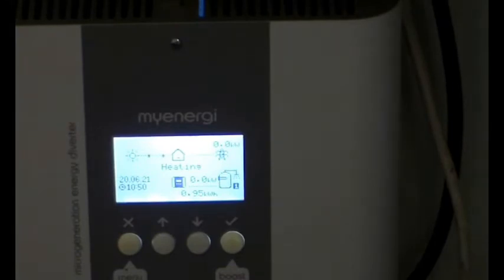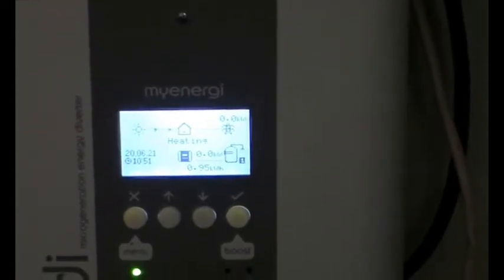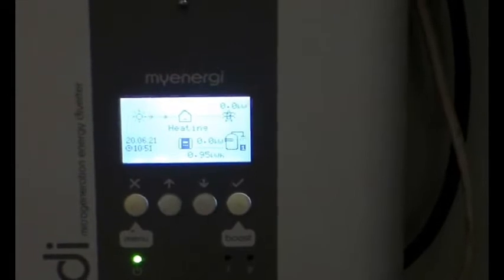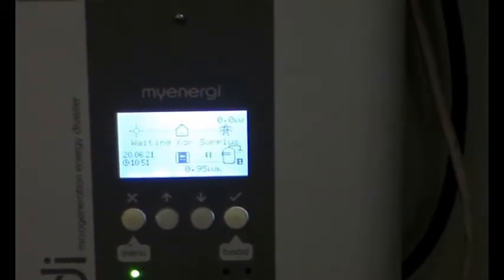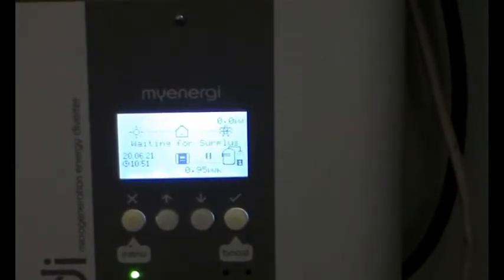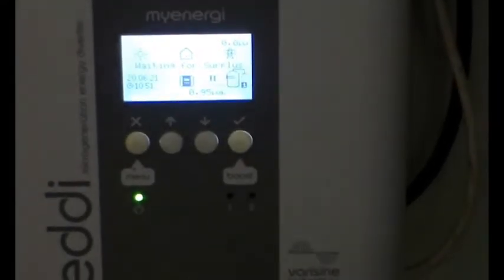This one also has the my energy Eddie which has a setting where you can put a delay in there so that the Eddie actually piggybacks the Emerson. So the Emerson is the primary because that's the one that's wired up that way, and then the Eddie soaks up any surplus.